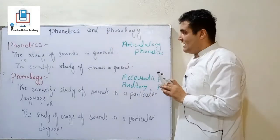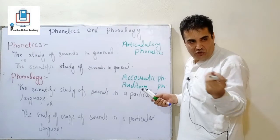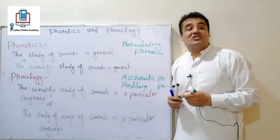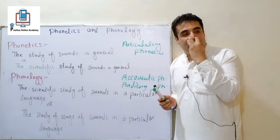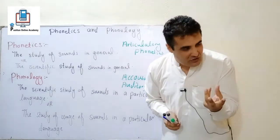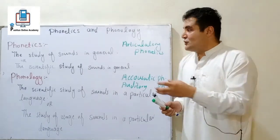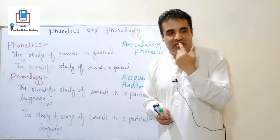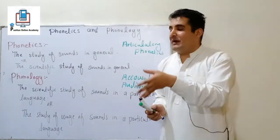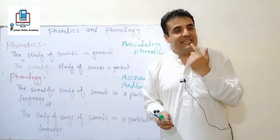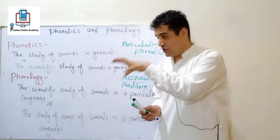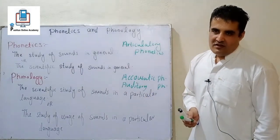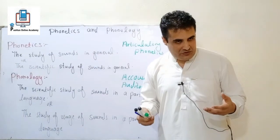In phonetics, we don't talk about language — it has nothing to do with a specific language. Articulatory phonetics means the study of articulators — the organs that produce sound. Articulators include the lips, teeth, alveolar ridge, hard palate, and soft palate. This is how we produce sounds with the help of articulators — similar to makharij in Tajweed.